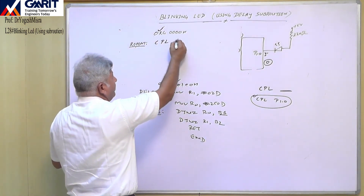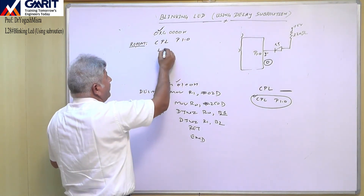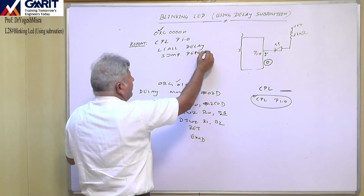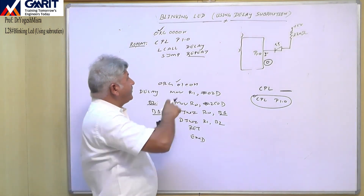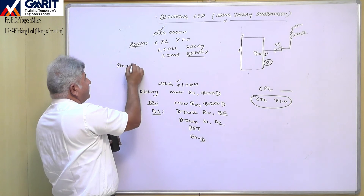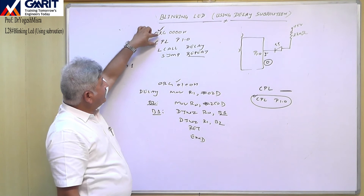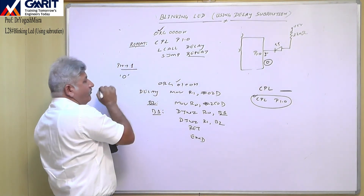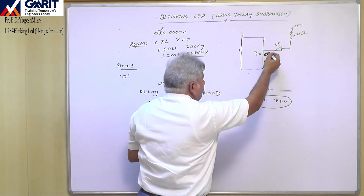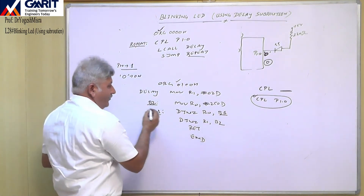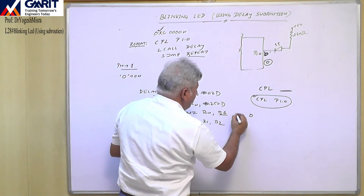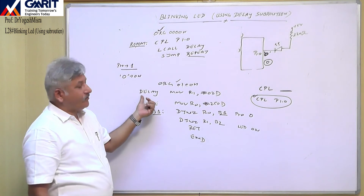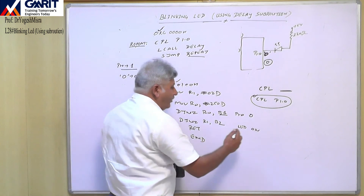So we can simplify the program to: CPL P1.0, then LCALL delay, then SJMP repeat. Initially P1.0 is 1; the first CPL makes it 0 so the LED turns on. After the delay, SJMP goes back to repeat, CPL makes P1.0 complement from 0 to 1 so the LED turns off. Then LCALL delay again keeps it off for one millisecond. This creates the same on/off blinking behavior.